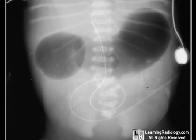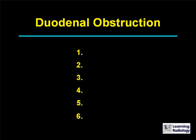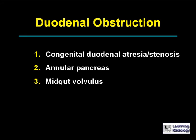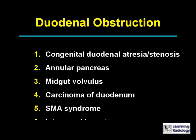The differential is for duodenal obstruction in a child or adult. There are six causes: congenital duodenal atresia or stenosis, annular pancreas or midgut volvulus in a child, and carcinoma of the duodenum, superior mesenteric artery syndrome, and intramural hematoma.